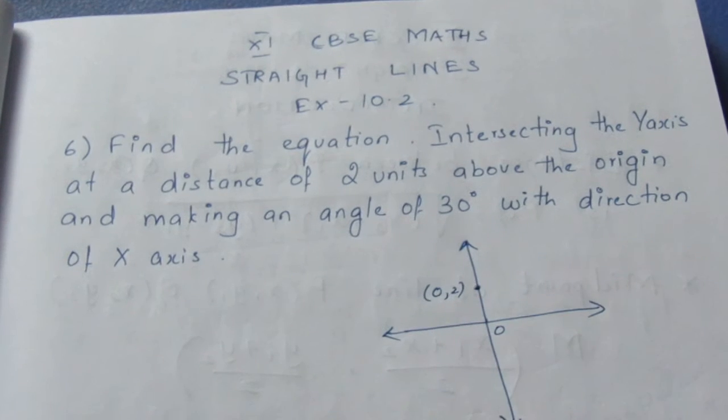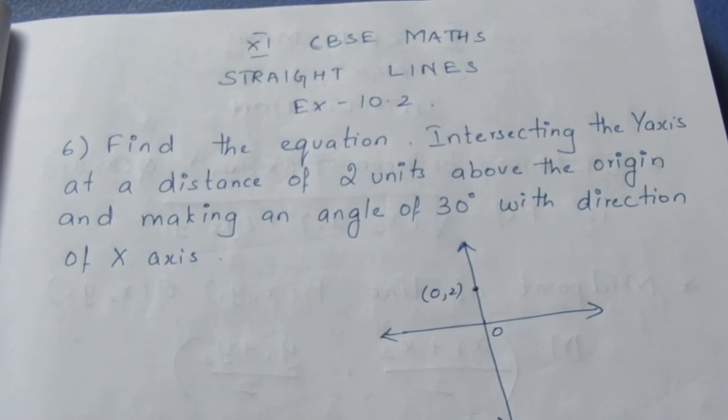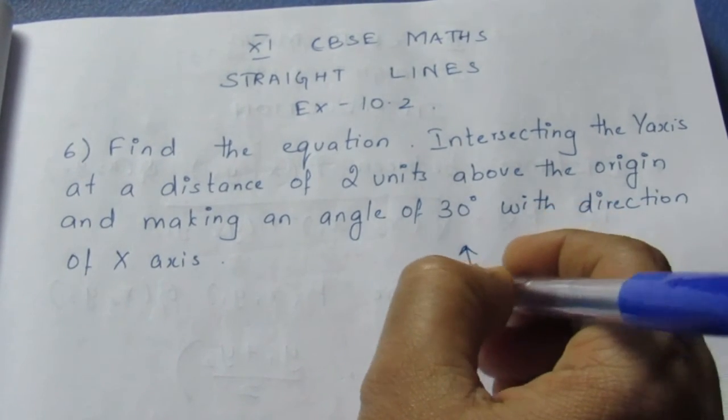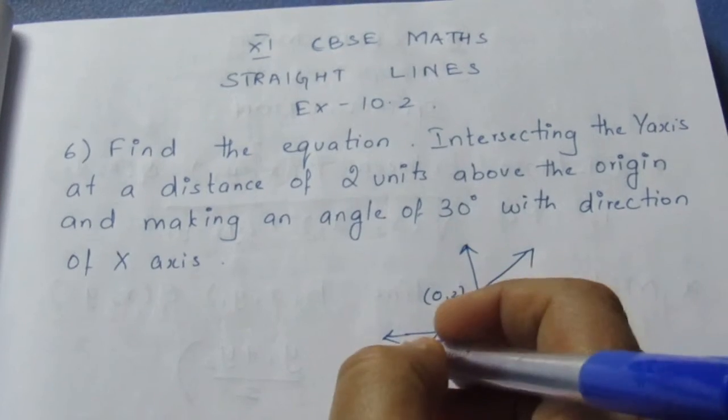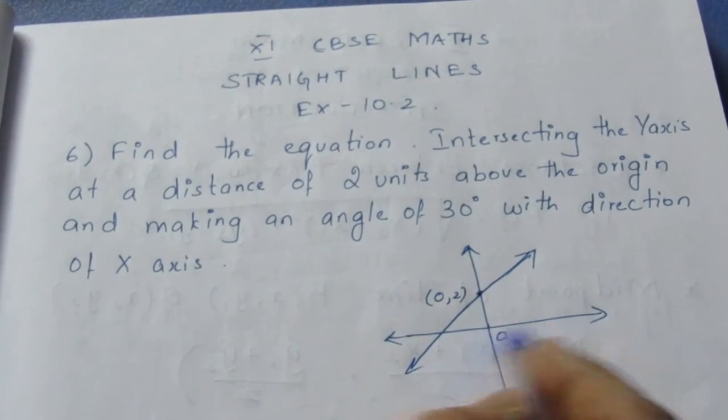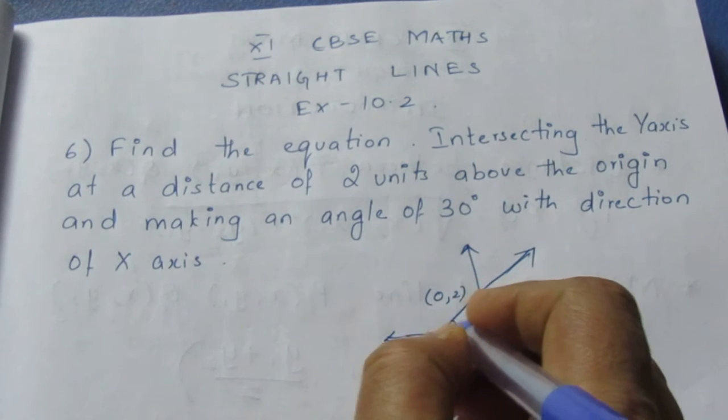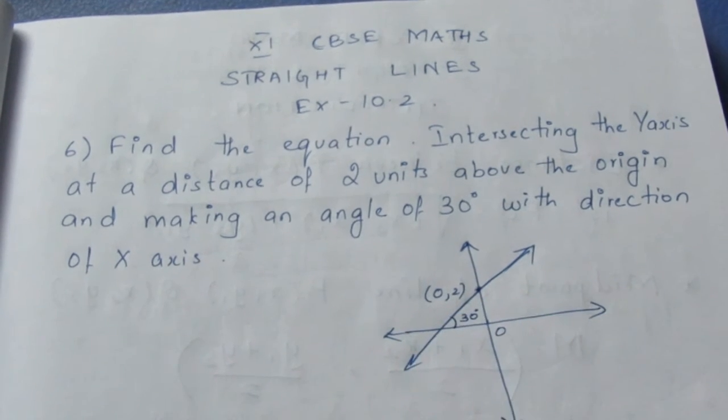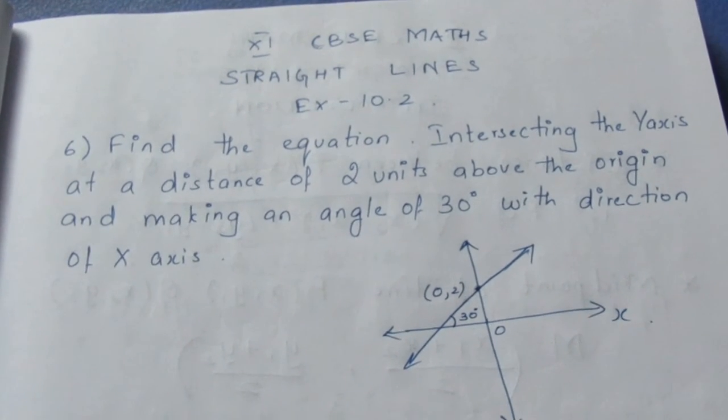This coordinate point is (0, 2). If I draw a line, this line makes an angle of 30 degrees with the direction of the x-axis. So this is the direction of the x-axis. This makes 30 degrees with the x-axis.